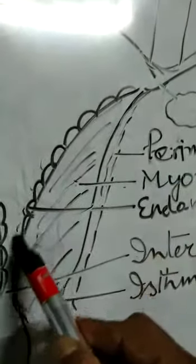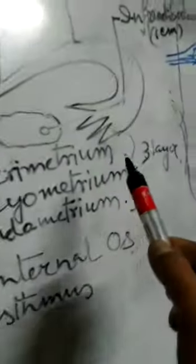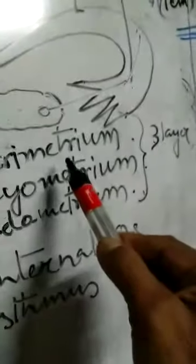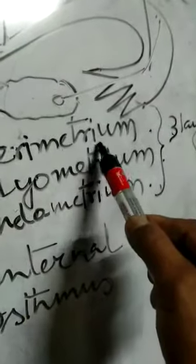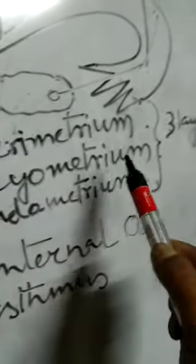The anterior-posterior thickness is one inch. Now the uterine wall: the outer surface is covered by the peritoneum, known as the perimetrium; the musculature of the uterus is known as the myometrium; and inside there is mucous membrane known as the endometrium. So the uterus has three layers: perimetrium, myometrium, and endometrium.